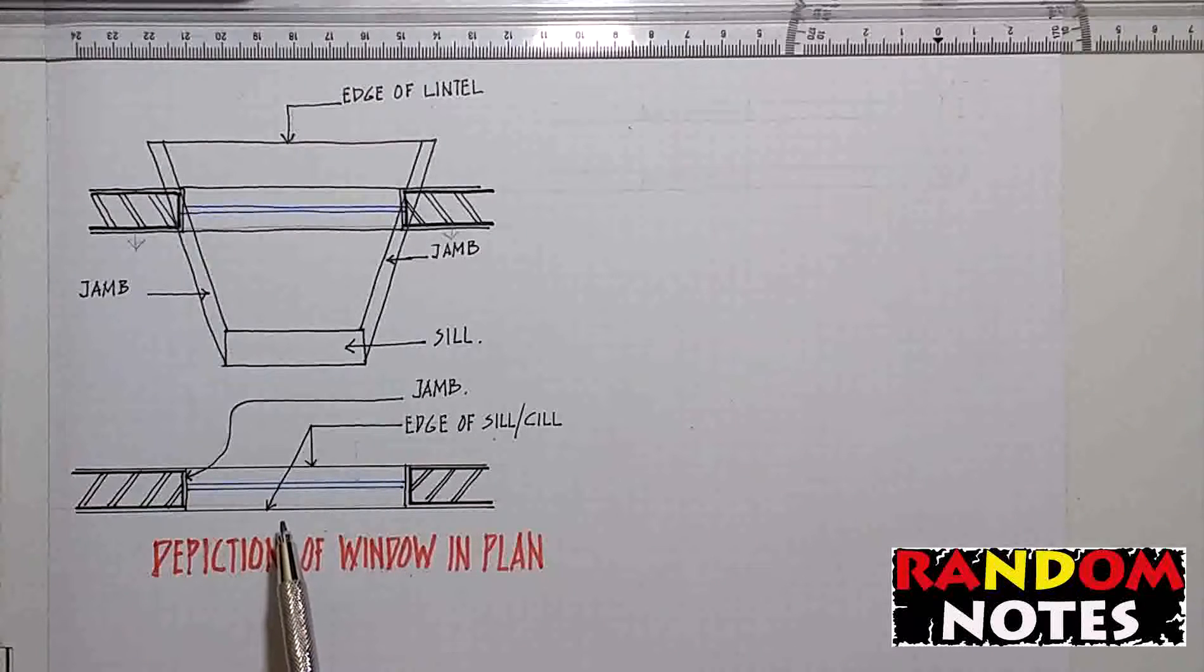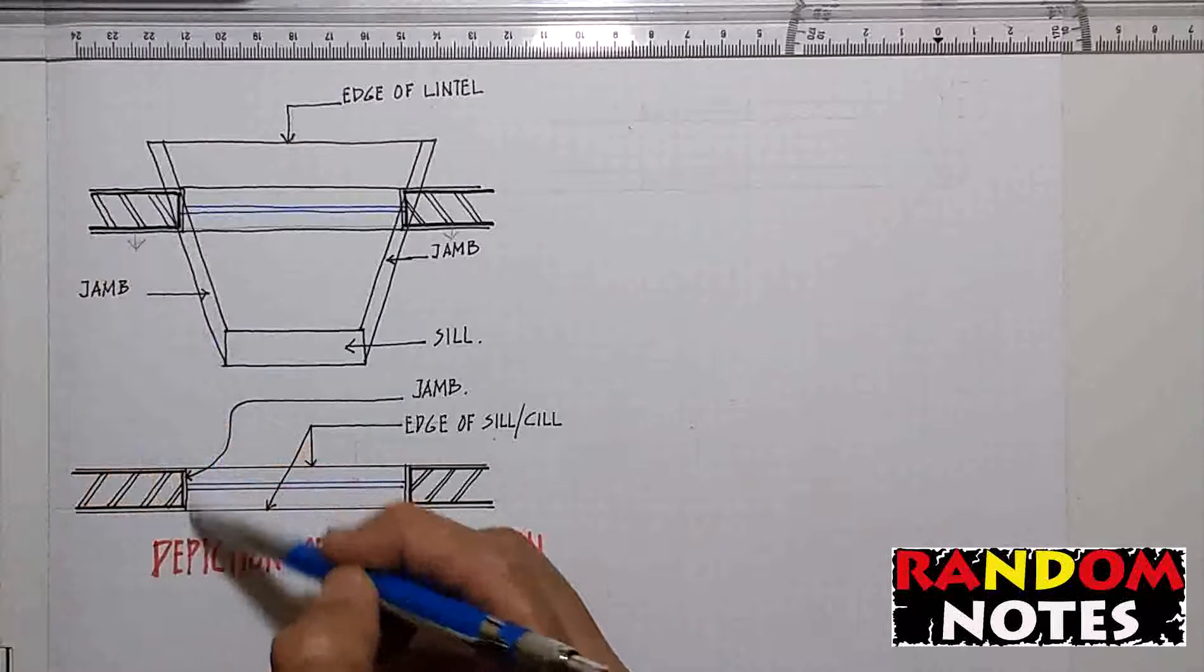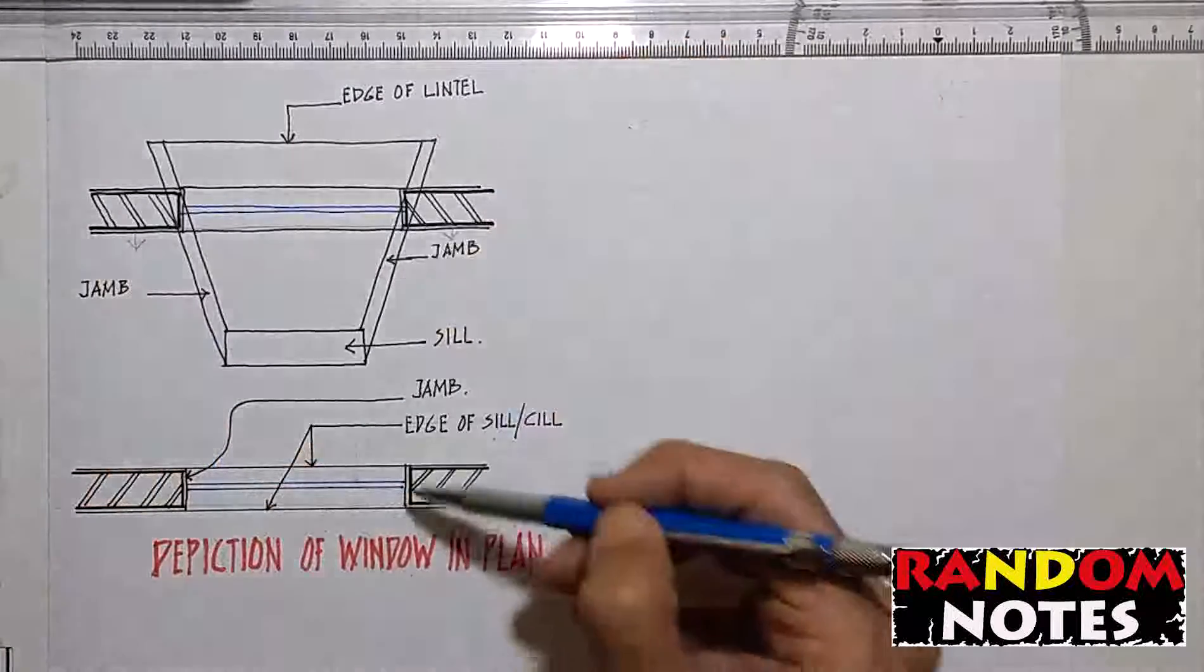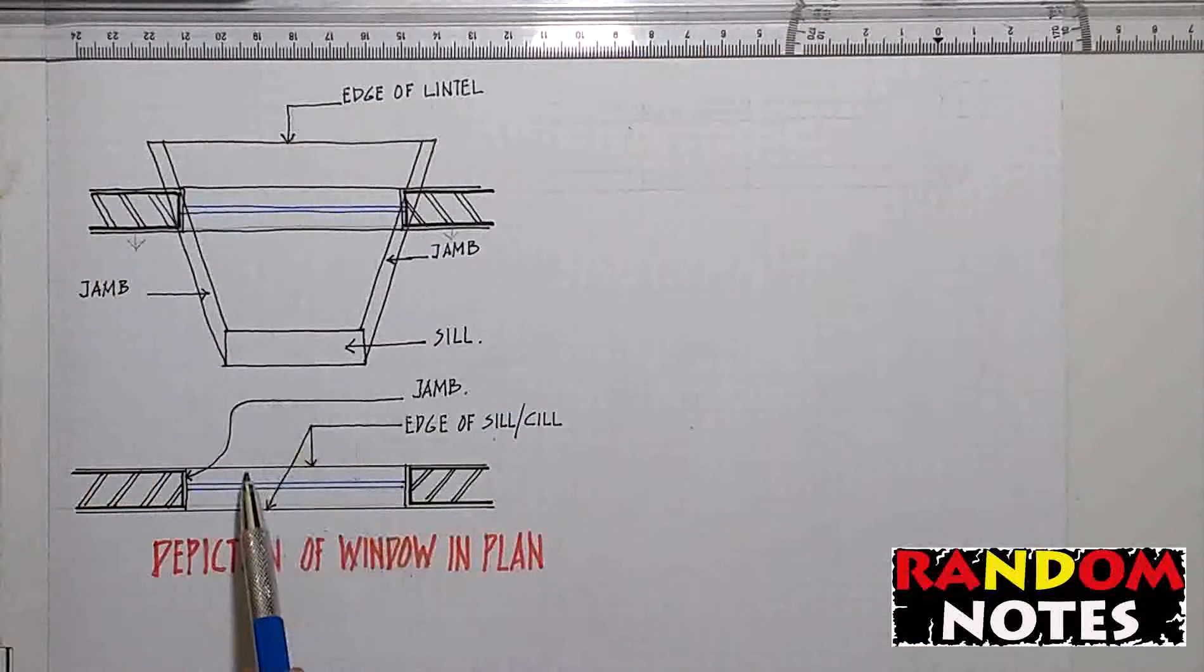A quick revision. The walls and the jam are drawn in thick lines as they are getting cut by the section plane. Sill lines are drawn with thin lines as they are beyond the section plane. And this completes the plan.